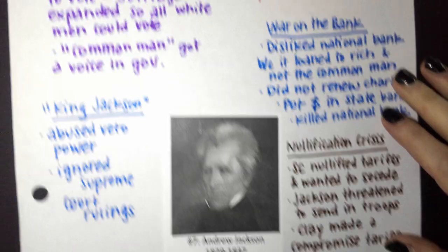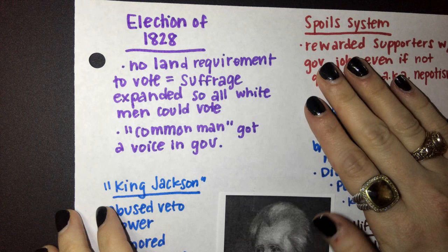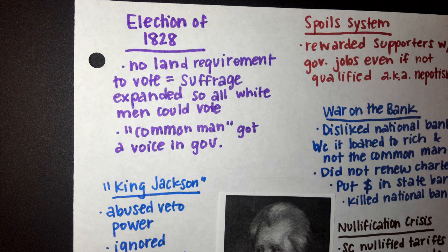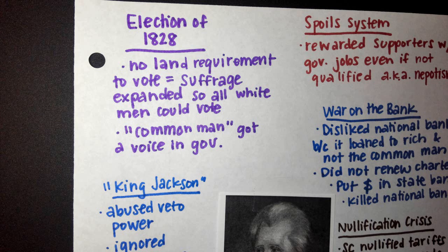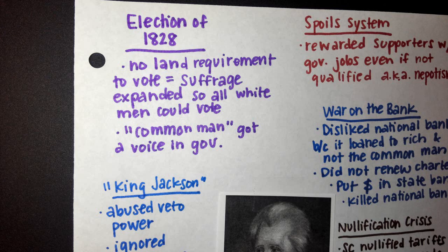We're going to start with his election of 1828. I want you to recall that in 1824, Andrew Jackson ran for President against John Quincy Adams. Since nobody won the majority — nobody was over 50% — it went to Congress to decide. In the corrupt bargain, John Quincy Adams made a deal with Henry Clay to make him Secretary of State if he threw his vote toward Adams. So Andrew Jackson felt like in 1824, he had the presidency stolen from him.